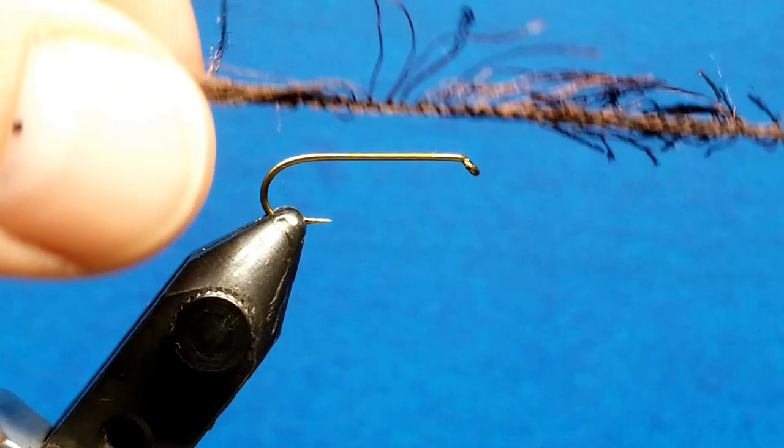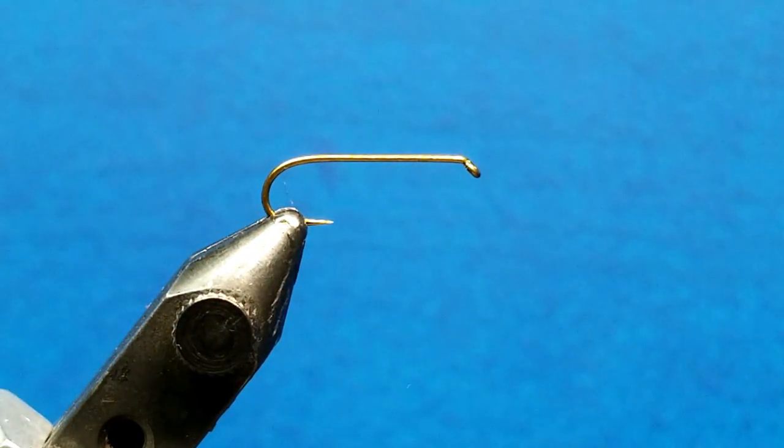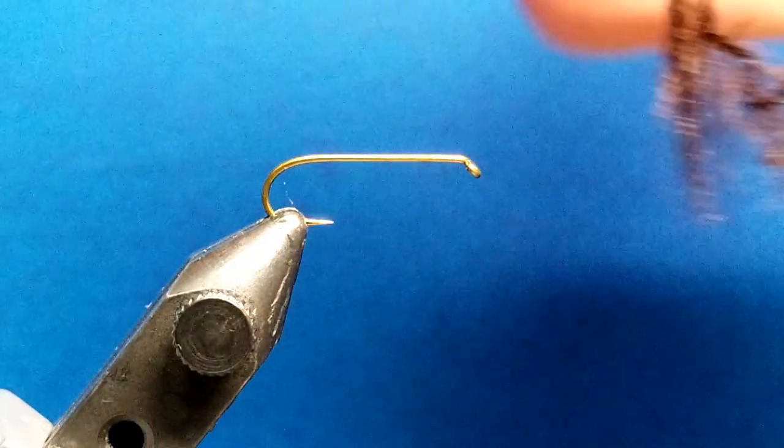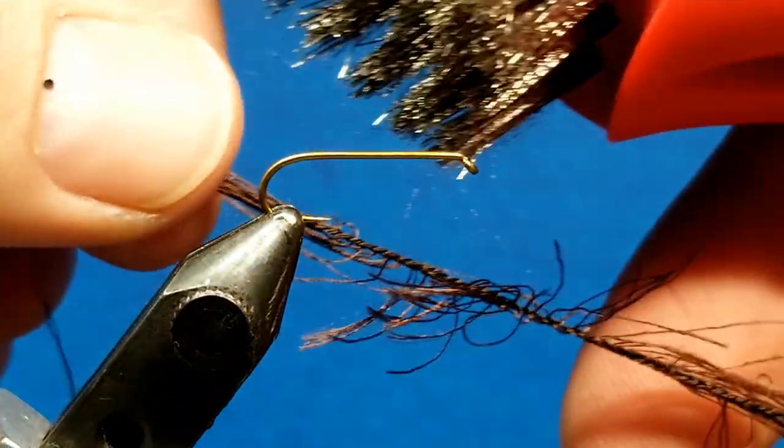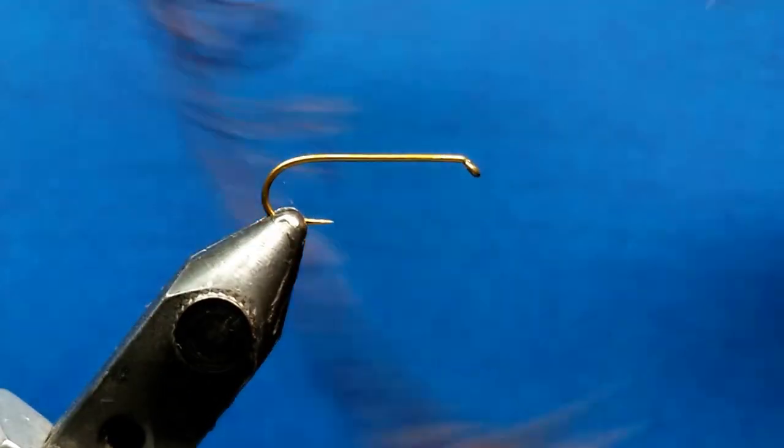It's important to note that when it comes out of the package it has kind of a stringy appearance like this. Very simply all I've done is similar to what Zach does. I think he prefers to use Velcro but I've used a wire brush and I've just worked over the material to fray it out as best that I can.